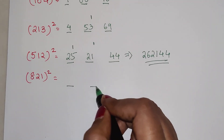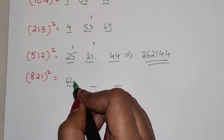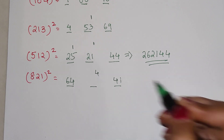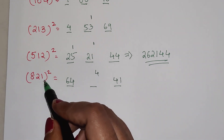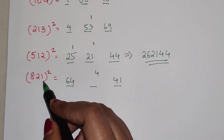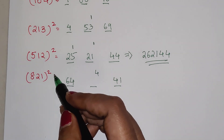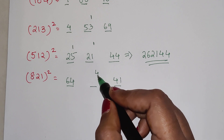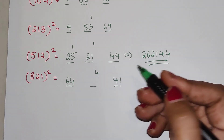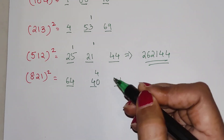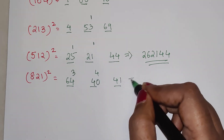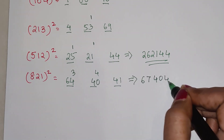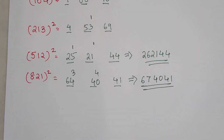For 821², we split as 8 and 21. 8² = 64, and 21² = 441. Then 8 into 21 = 168, times 2 = 336. 336 plus carry 4 gives 340 — so we write 40 and carry 3. The final answer is 674041.